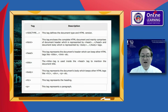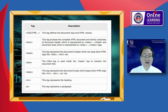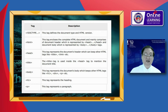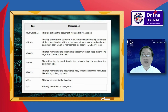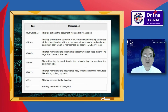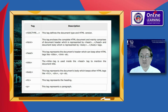Here are examples of HTML document tags. The DOCTYPE tag defines the document type and HTML version. The HTML tag encloses the complete HTML document and mainly comprises the document header, represented by head and slash head, and the document body, represented by body and slash body tags.